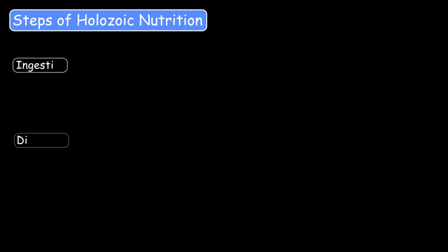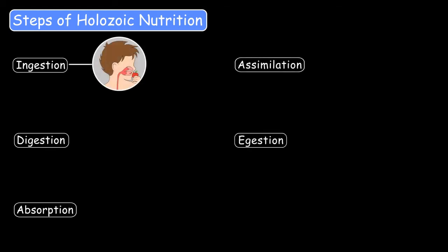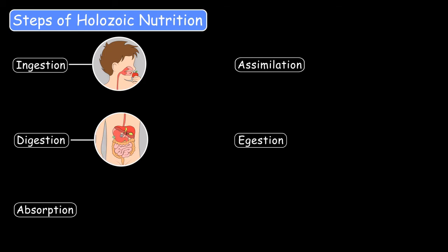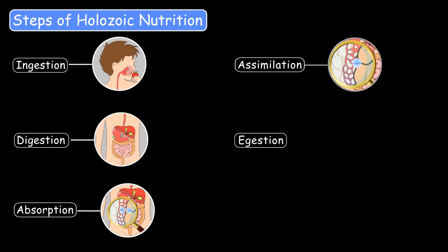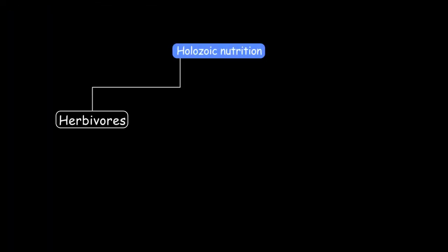Let's revise the five steps of holozoic nutrition: ingestion, digestion, absorption, assimilation, and egestion. Ingestion — food is first taken into the body through the mouth. Digestion — the food is converted into a simple soluble form by various enzymes. Absorption — simplified products are then absorbed or transported to the body. Assimilation — simplified products are used for various processes. Egestion — the undigested food particles are expelled. Holozoic nutrition occurs in herbivores, carnivores, and omnivores. Herbivores consume plants and plant products. Carnivores consume flesh of other animals, and omnivores consume both flesh of animals and plant products.